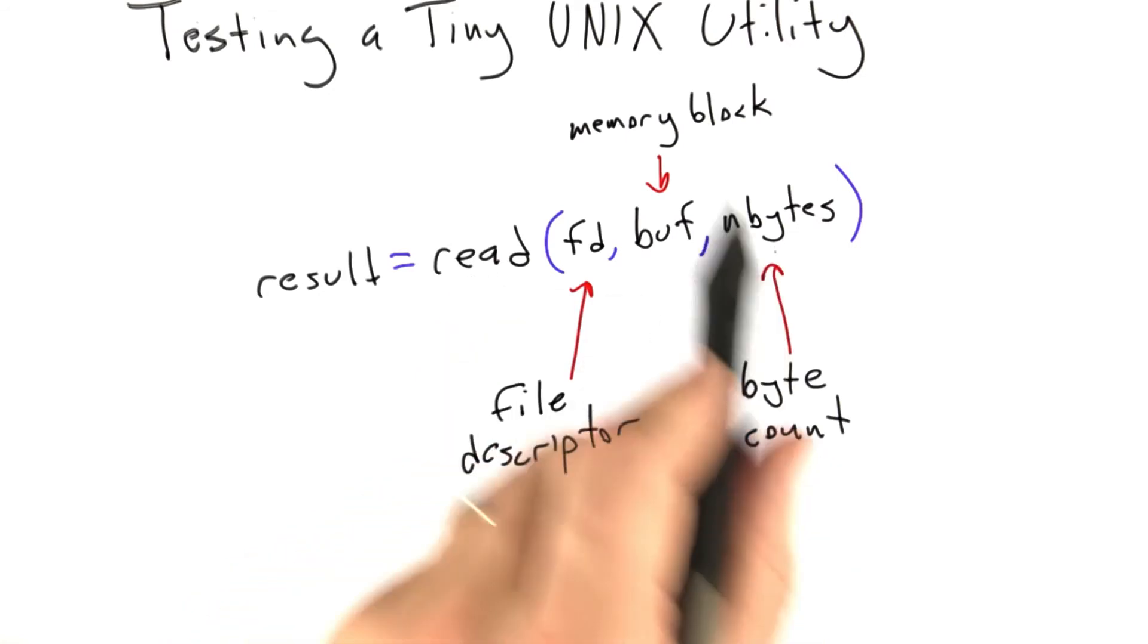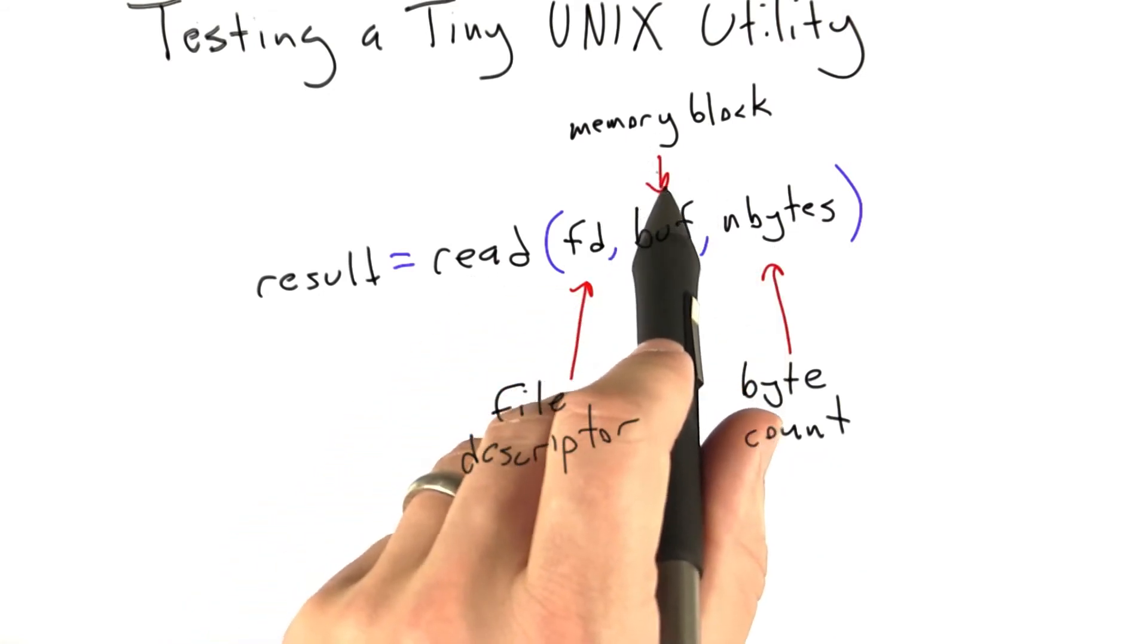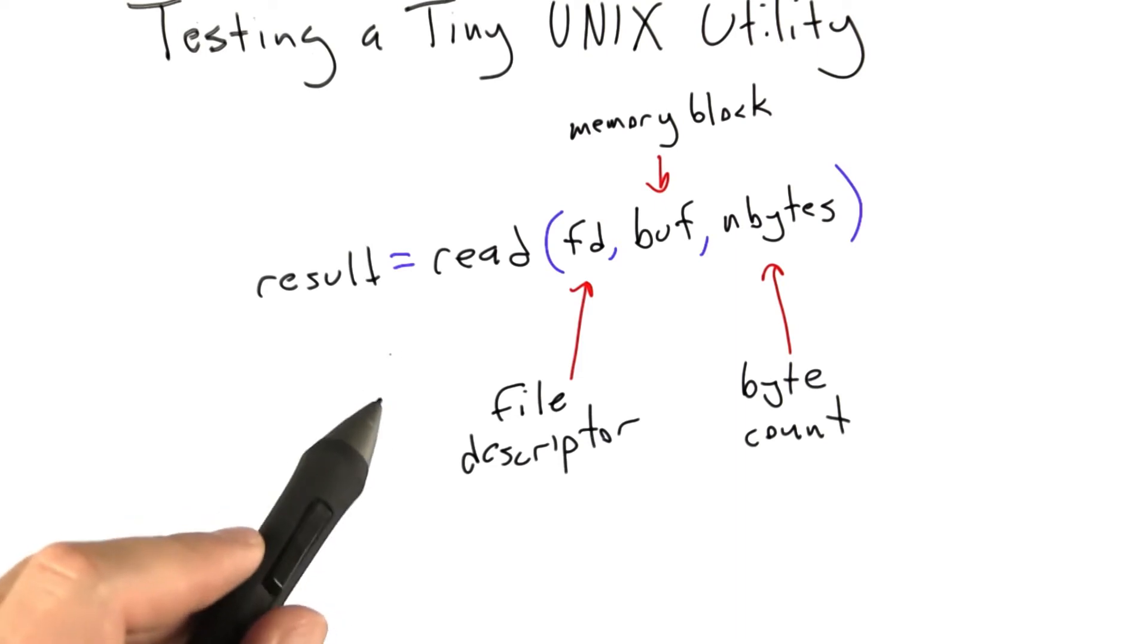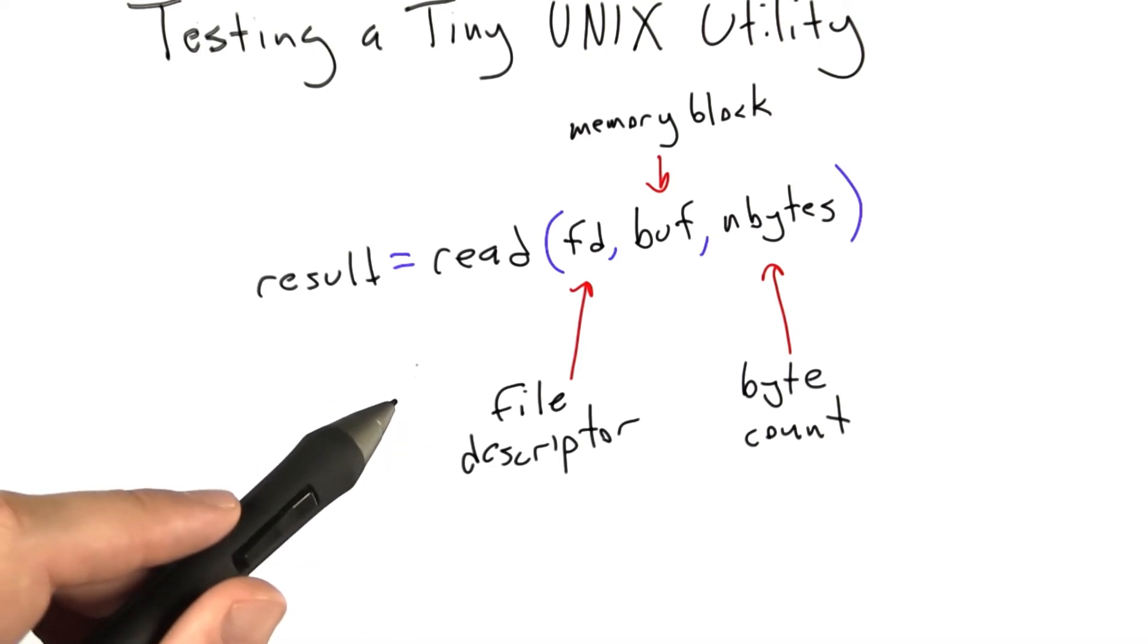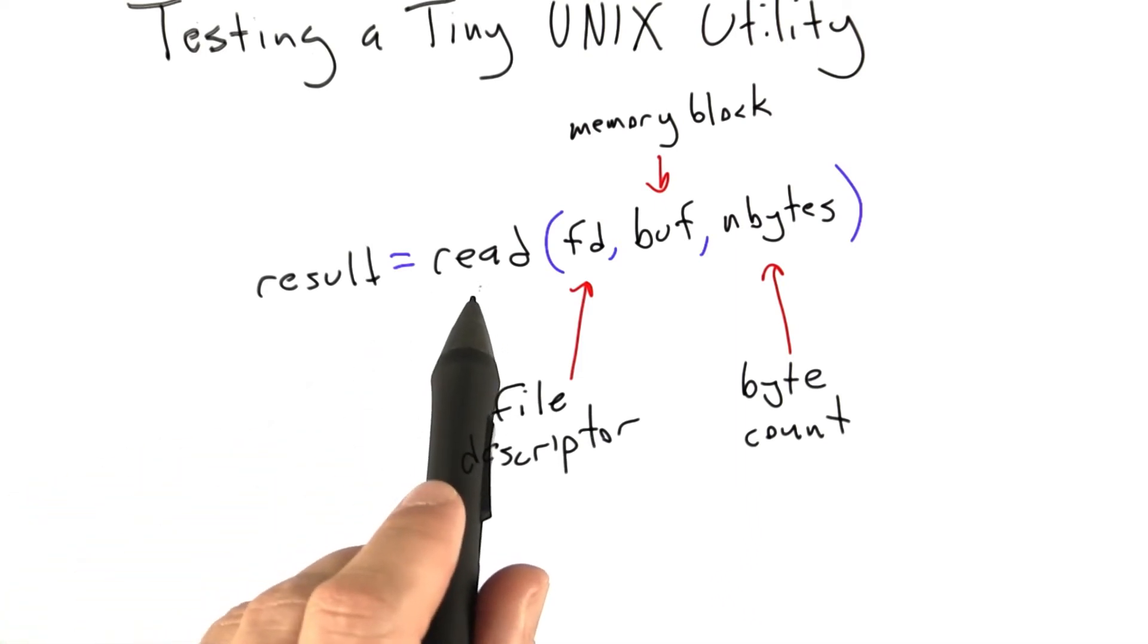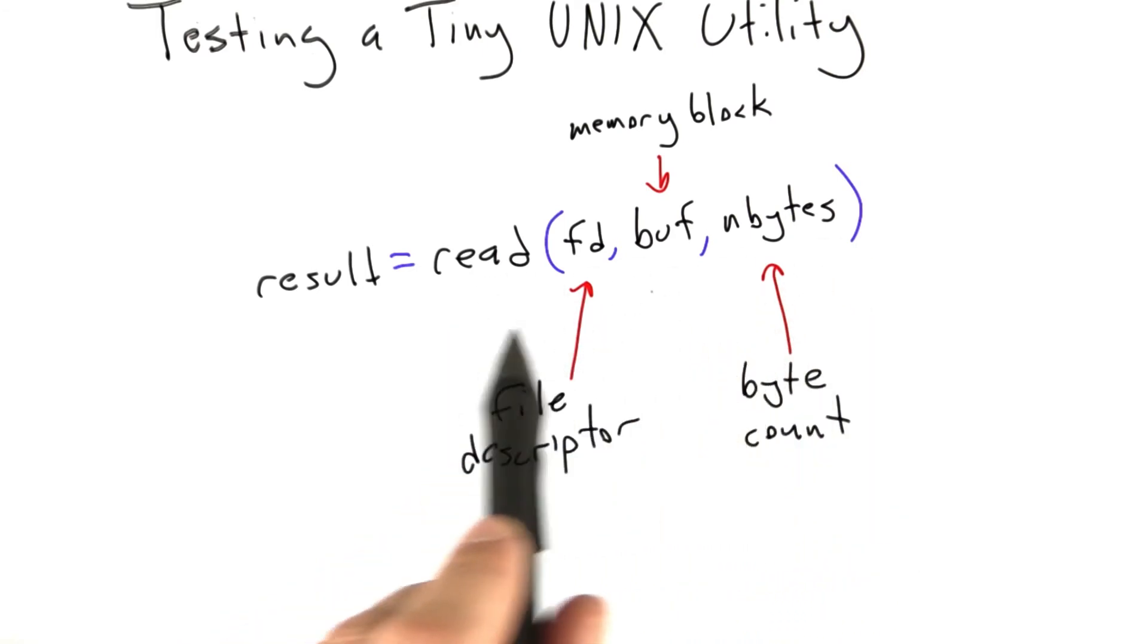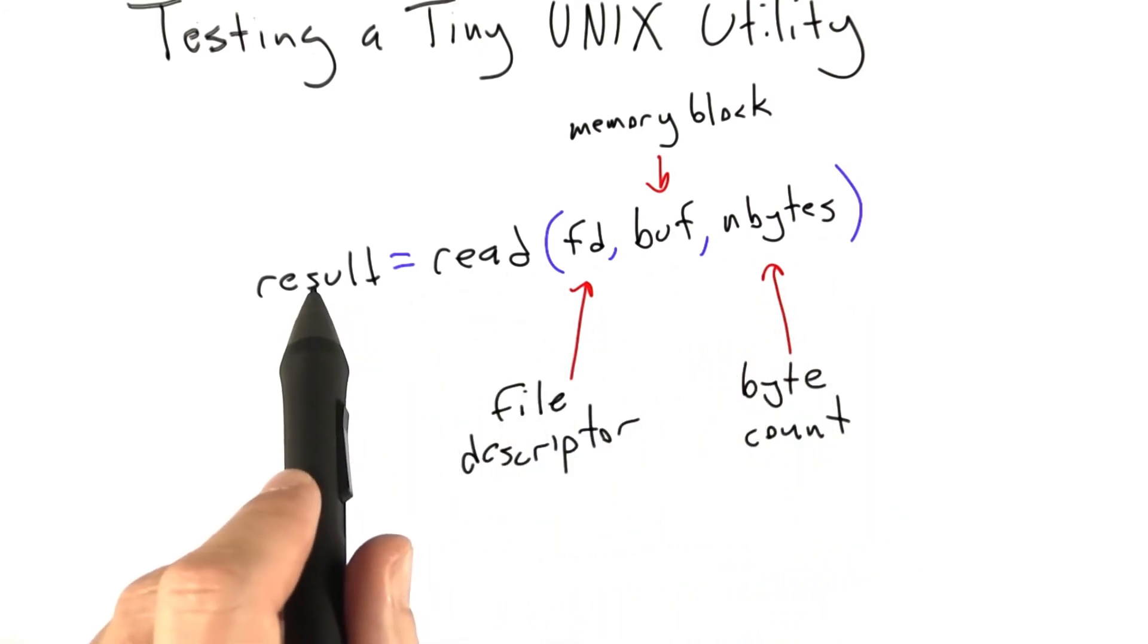Usually what the read system call does is it reads the number of bytes that you expected into the memory block that you provided, and all is good. The return value of read is the number of bytes read. That's what usually happens. But there are a couple of other things that can happen. A second possibility is the read system call can return zero, indicating that you've reached the end of the file. Another thing that can happen is it can return minus one if it failed.